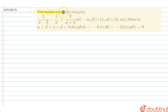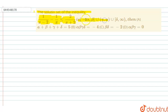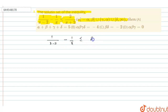Hello, welcome to Doubtnut. In this question, we have to find the solution set of the inequality: 1/(x-2) - 1/x ≤ 2/(x+2). The value of x is given in terms of alpha, beta, gamma and delta.